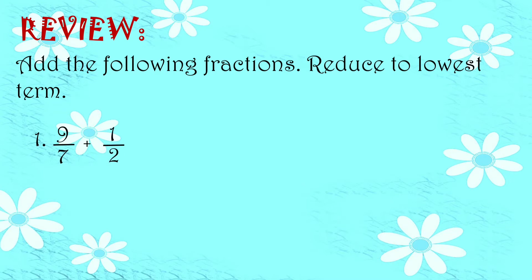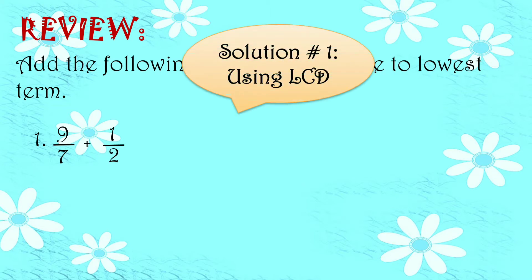So let's have number 1: 9 over 7 plus 1 half. So meron akong ipapakita sa inyong dalawang solutions. Pili na lang kayo kung saan kayo mas nadadalian. So solution number 1, using LCD — least common denominator. Ginagamit natin yan para maging magkaparehas na yung ating denominator. At pwede na tayong makapag-add.